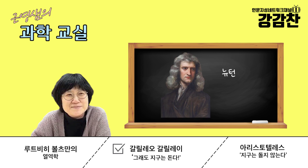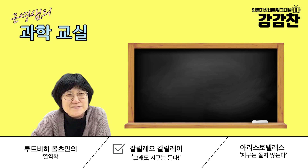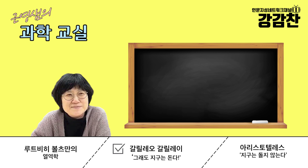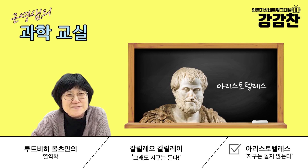1642년에 갈릴레오가 죽는데, 이때 뉴턴이 태어납니다. 갈릴레오의 환생이다 같은 얘기도 있어요. 갈릴레오 갈릴레이 하면 유명한 말이 '그래도 지구는 돈다'인데, 갈릴레오는 그 말을 한 적이 없지만 중요한 표현이에요. 지구는 돈다는 것, 즉 지구도 운동한다는 말입니다. 이전까지는 아리스토텔레스의 세계관이 서구를 지배했어요. 이게 중세적인 세계관이기도 합니다.